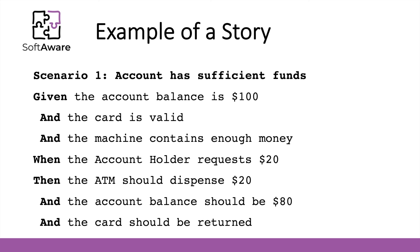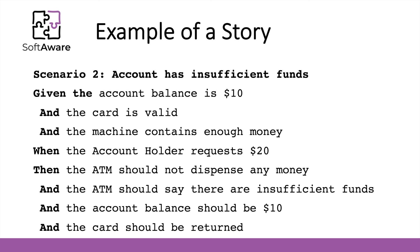As we go along with the scenario descriptions and even the creation of these scenarios, it's quite easy to uncover other scenarios. In scenario number two, the account has insufficient funds — there isn't enough money to make the withdrawal. Given the account balance is $10, the card is valid, and the machine contains enough money — when the account holder requests $20 — then the ATM should not dispense any money, the ATM should say there are insufficient funds, the account balance should still be $10, and the card should be returned.